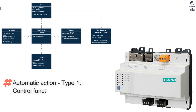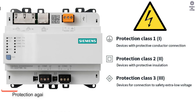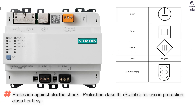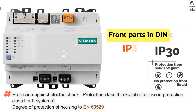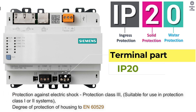Protection classification: automatic action is type 1, control function is class A, degree of pollution is 2, overvoltage category is 2, protection against electric shock is protection class 3, suitable for use in protection class 1 or 2 systems. Degree of protection for front parts and cutout is IP 30, terminal part is IP 20.